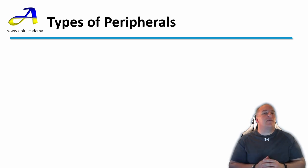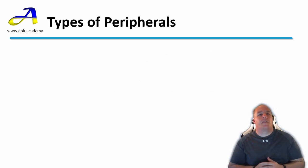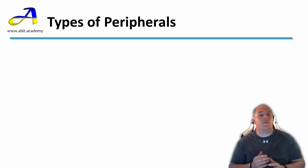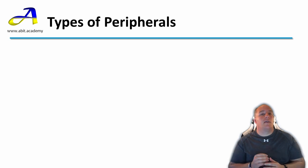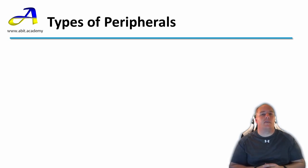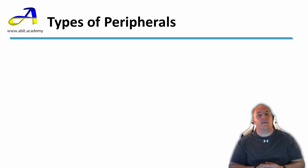In terms of ICT, what do you think a peripheral is? The definition of peripheral is something related to or situated on the edge or periphery of something. So in terms of ICT, peripherals are devices related to computers — they normally add additional functionality to the computer.